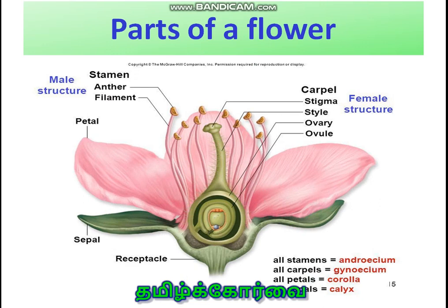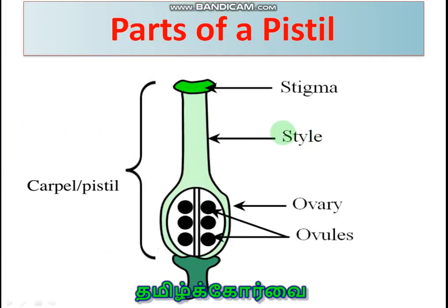This is the parts of the flower. Here you can see the receptacle on which the four whorls of a flower are present. The outermost whorl is the calyx, followed by corolla, third whorl androecium — the male reproductive structure — and the fourth whorl gynoecium, the female reproductive structure. It consists of an important structure called the ovary, within which the ovules are present. This is the ovule, which is going to become the seeds in future.